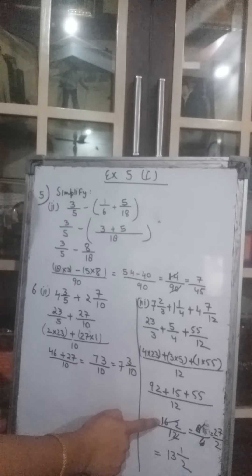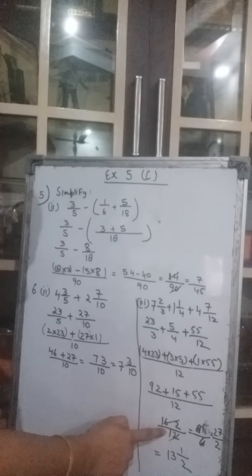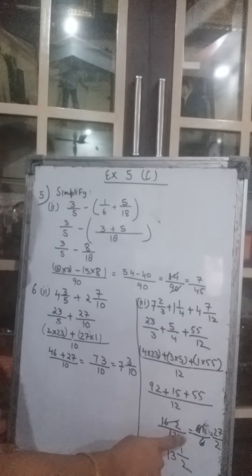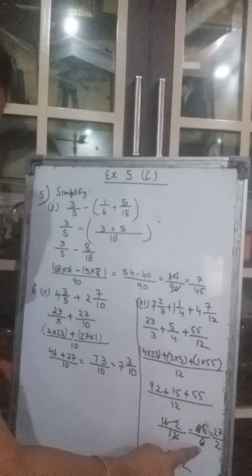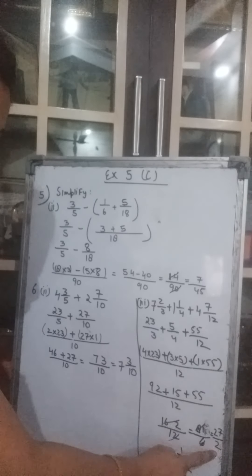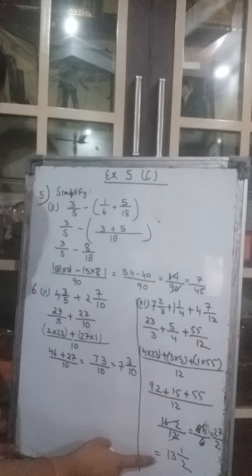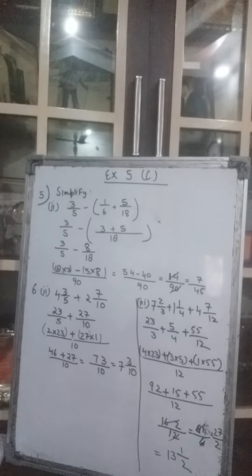So this gives you 162 upon 12. Let's convert it into the simplest form: divide by 2 to get 81 upon 6, then divide by 3 to get 27 upon 2. Now convert into mixed number: 27 divided by 2 gives 13 whole 1 upon 2.